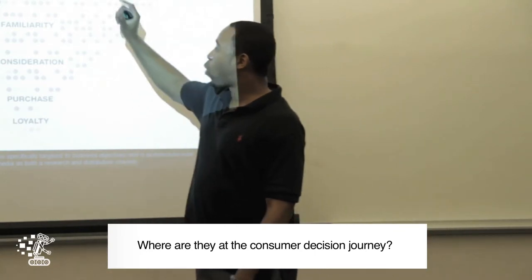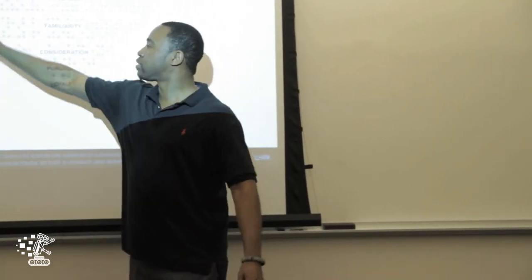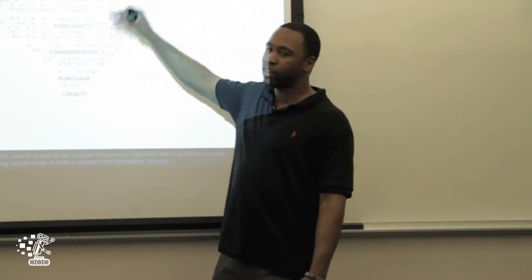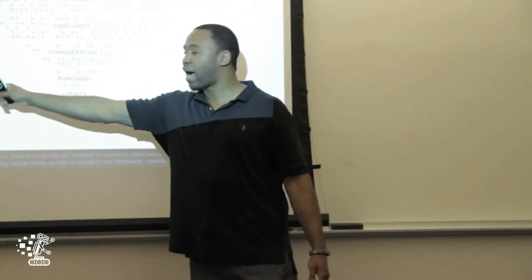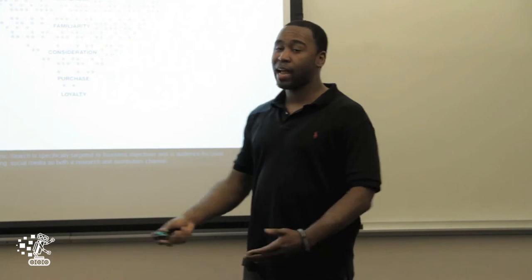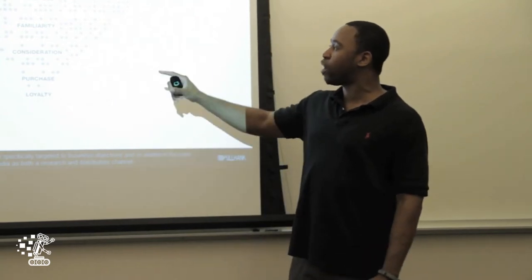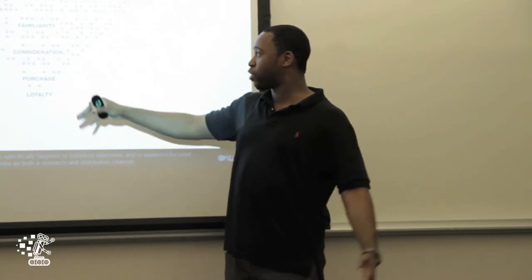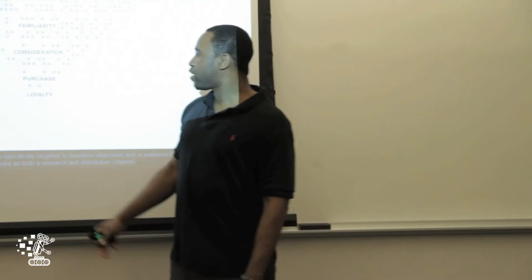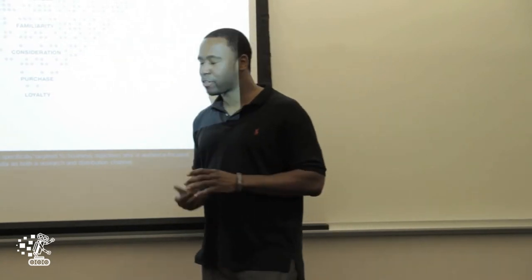The consumer decision journey is: awareness, familiarity, consideration, purchase, loyalty. We map keywords back to where they sit in that journey. Someone searching 'flowers' is really high-funnel — awareness — they don't know who they want to buy from. But if they're searching 'buying chrysanthemums,' they're ready to buy. And then someone searching 'what flowers for a first date' is in a consideration phase — trying to figure out what to do. We treat these people differently because they are different.